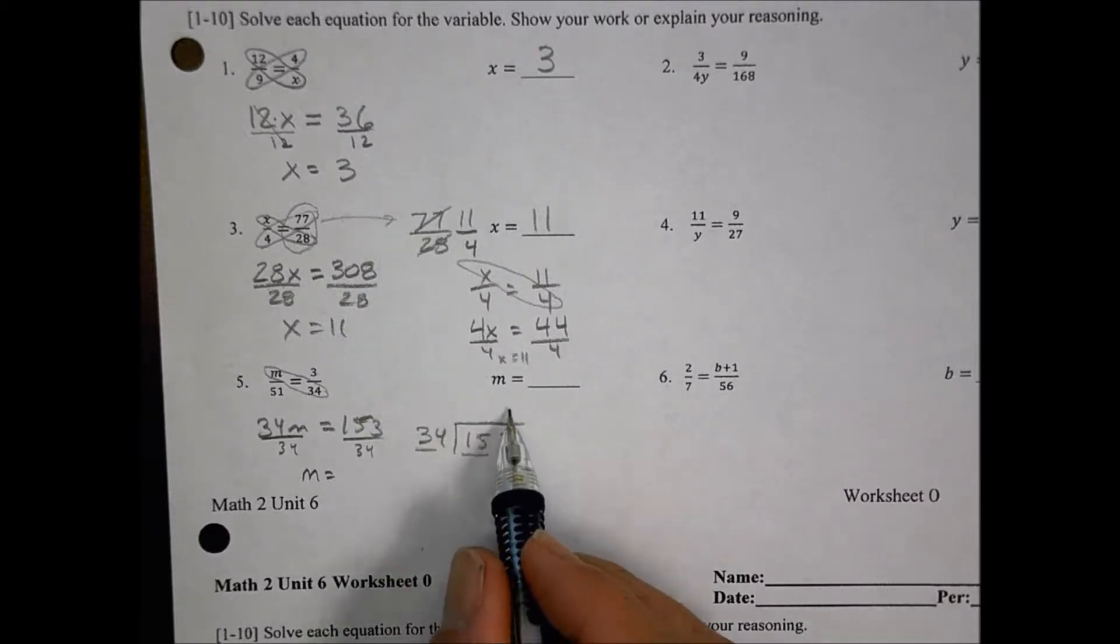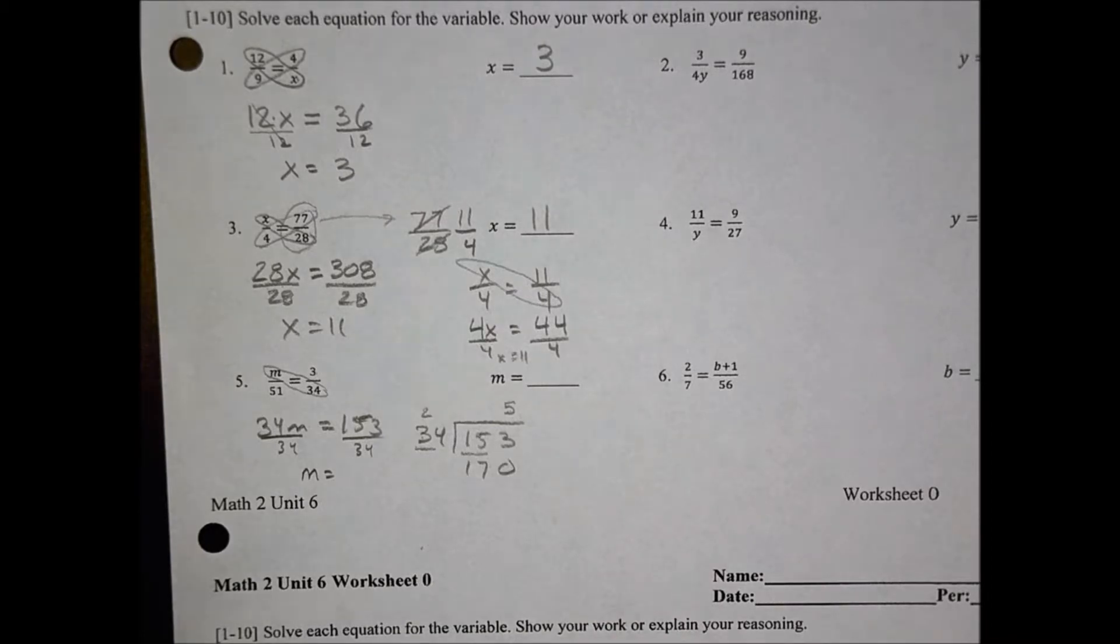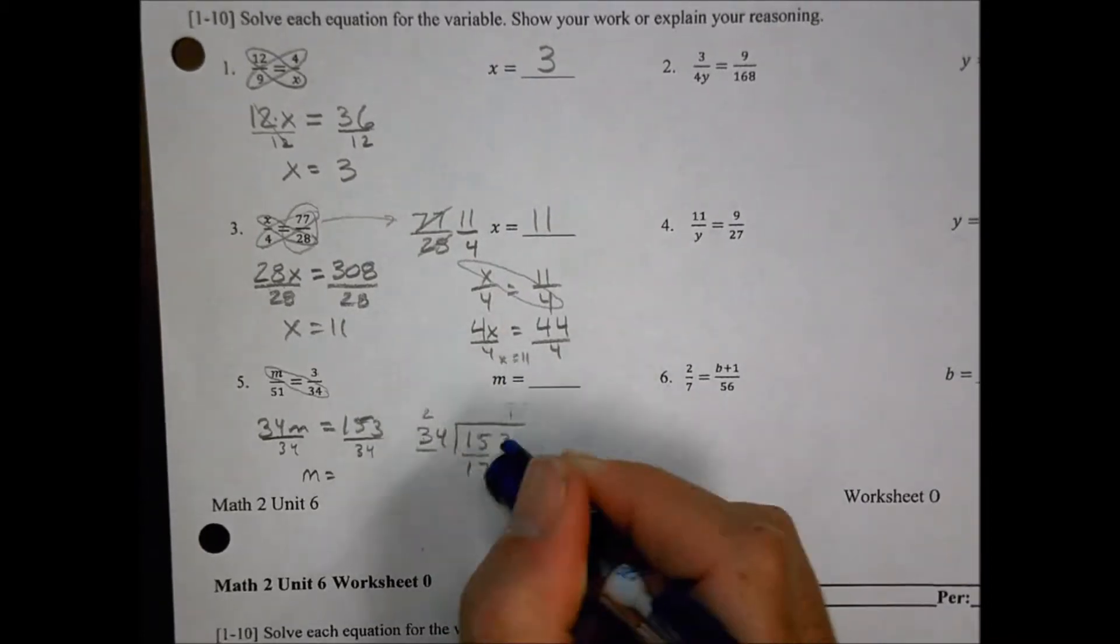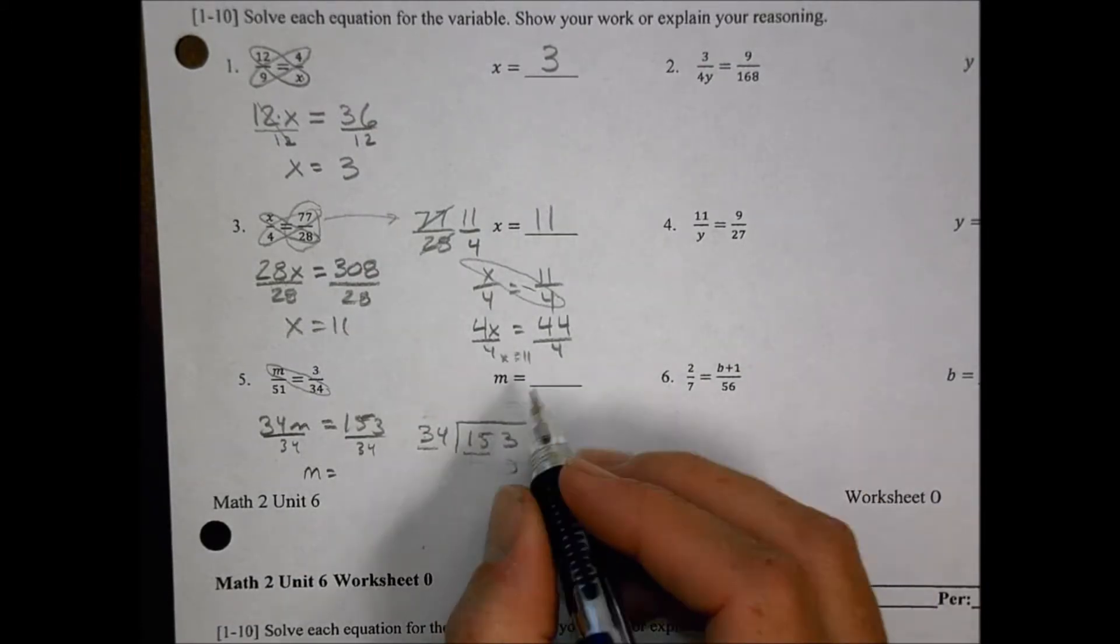Well, if I said 34 goes in 153 5 times, 5 times 4 is 20, carry the 2, 5 times 3 is 15, 16, 17, and I'm a little bit too large. So 5 is going to be too large of an estimate. So I'm going to drop it down by 1 and say that 34 goes into 153 4 times.